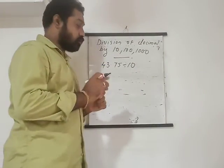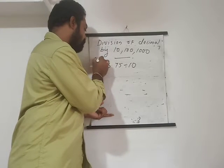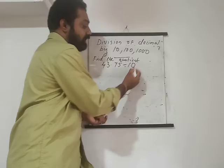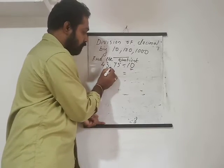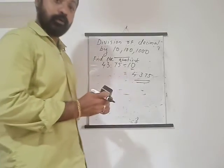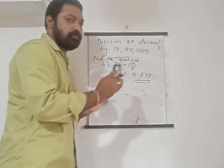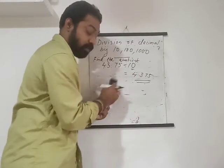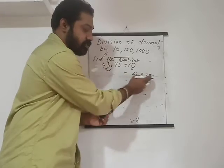In your textbook, there is a question: find the quotient of 43.75 divided by 10. Using the simple method: 10 has one zero, so the point shifts one place to the left. The answer is 4.375. This is the quick method to find the quotient. But the textbook also shows the usual long division method, which you must also know.